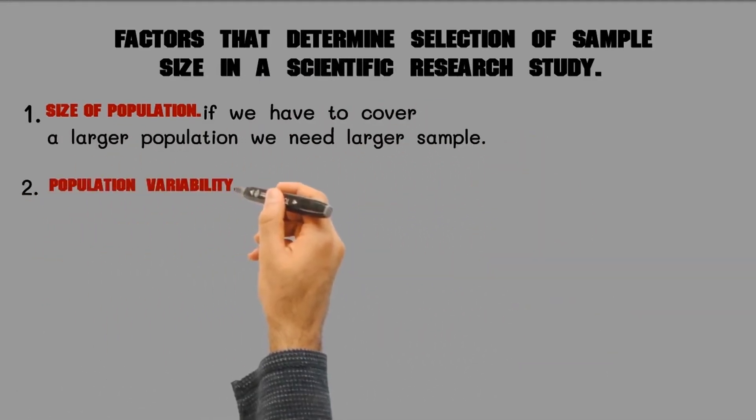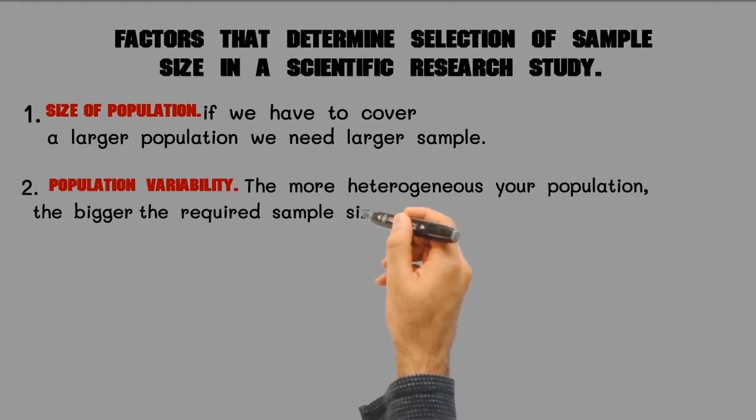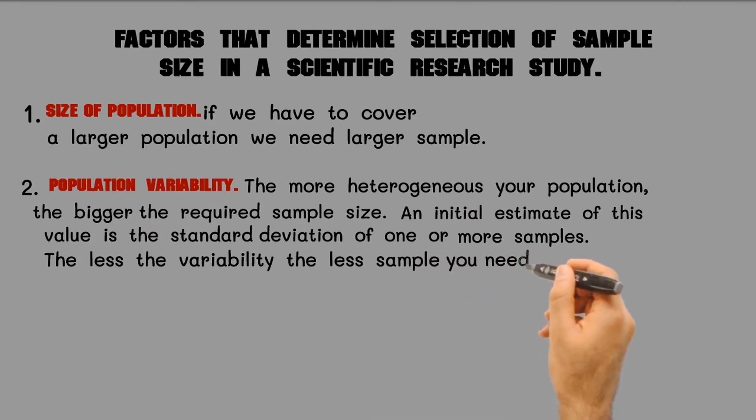Second, population variability. The more heterogeneous your population, the bigger the required sample size. An initial estimate of this value is the standard deviation of one or more samples. The less the variability, the less sample you need.